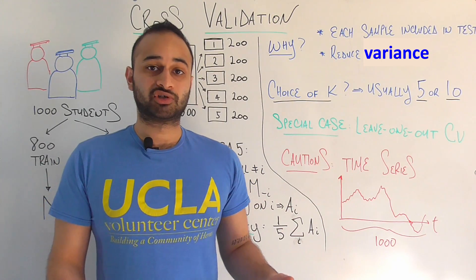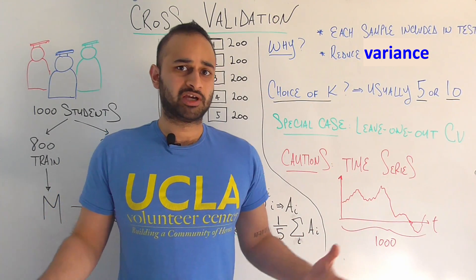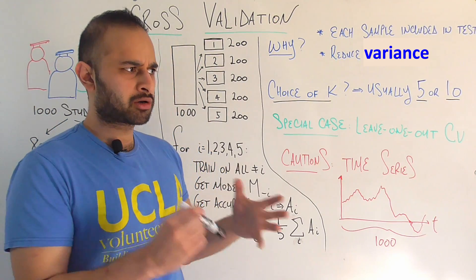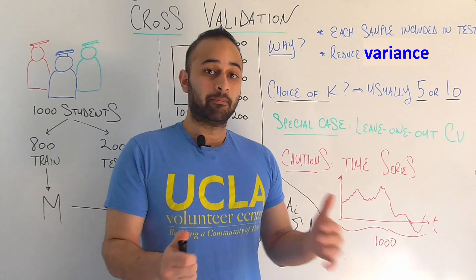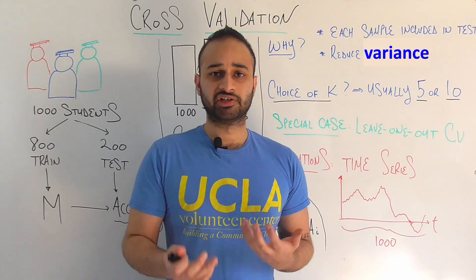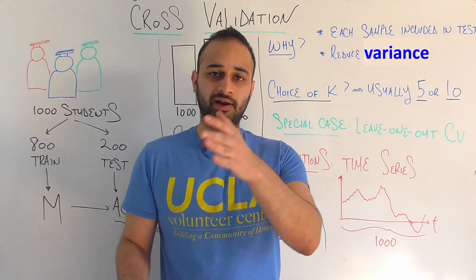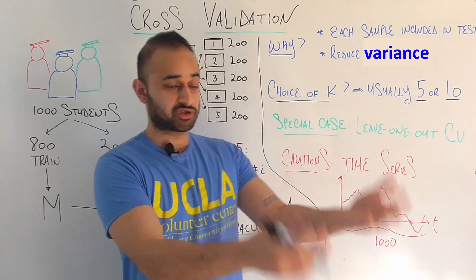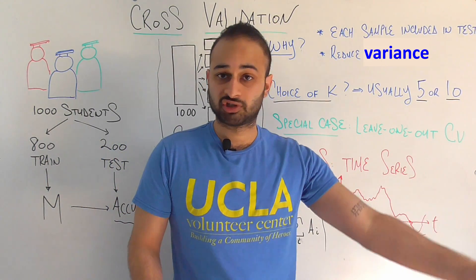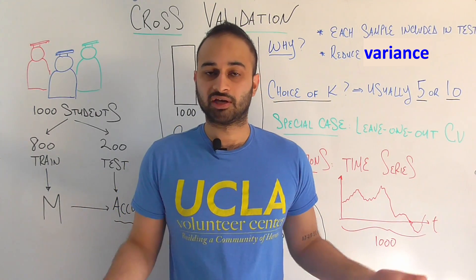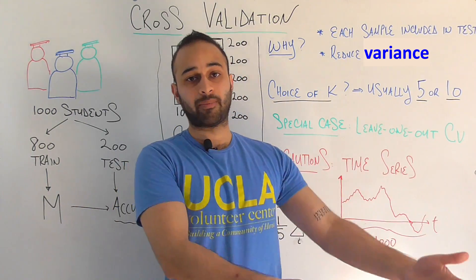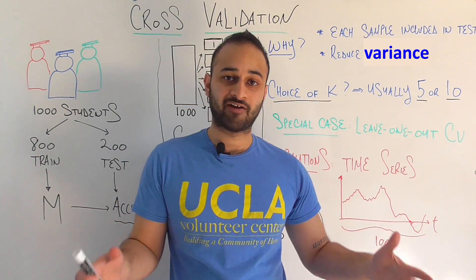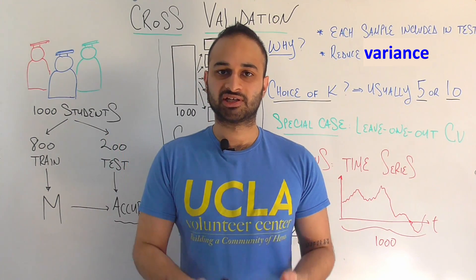Now, if a completely new student comes in that you've never seen before, which model do you use? We've built five models — one for each combination of training sets — so which do we use to predict the next student? You typically combine the models in some way. For a binary classification problem it's relatively simple: if four of the five models M-1, M-2, M-3, M-4, M-5 predict that the new student will drop out of their major and one says they won't, you do a simple majority vote and predict they will drop out. For a regression problem, you could take the arithmetic average of predictions from the five models. So you combine the models in some way to get your final prediction.